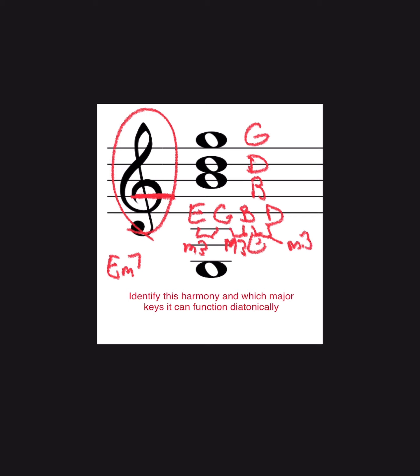Now we need to figure out in which major keys can we have this chord diatonically. Well, we need to know that in a major scale or a major key, the two chord, the three chord, and the six chord can be minor seven chords. So that would mean that E minor could function in D major as the two chord.